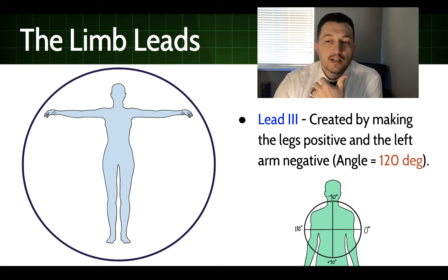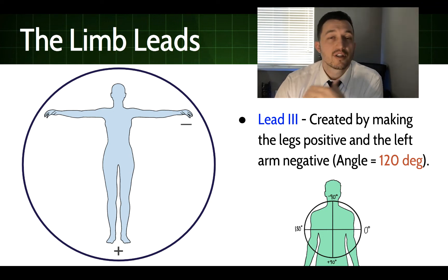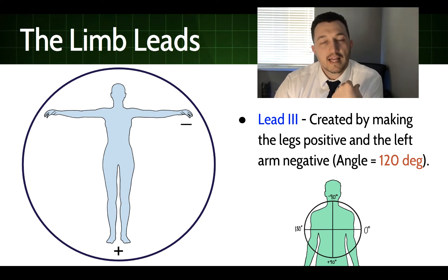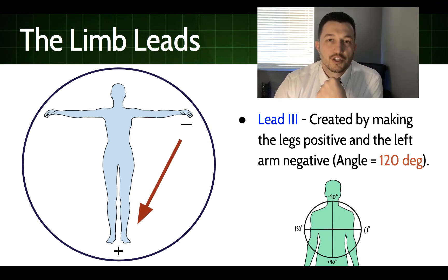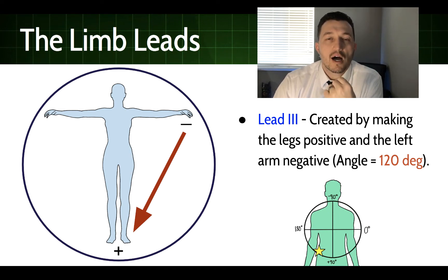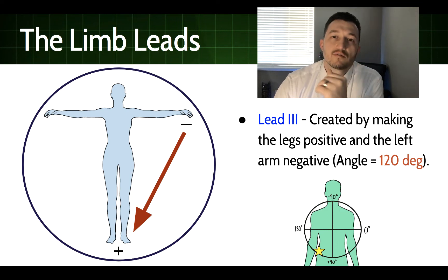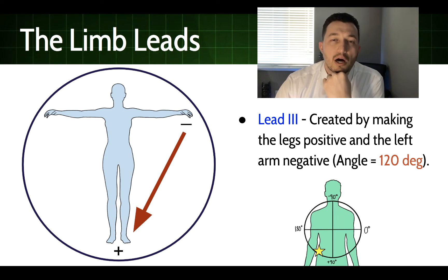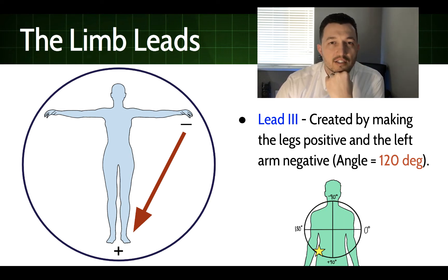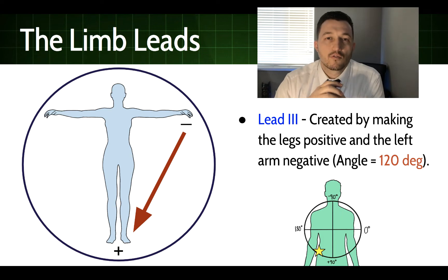Lead 3 is created by making the legs positive and the patient's left arm negative, giving an angle of orientation of positive 120 degrees — just the opposite of Lead 2. Both Lead 2 and Lead 3 are seeing the heart from the bottom, meaning they view the inferior aspect of the heart.